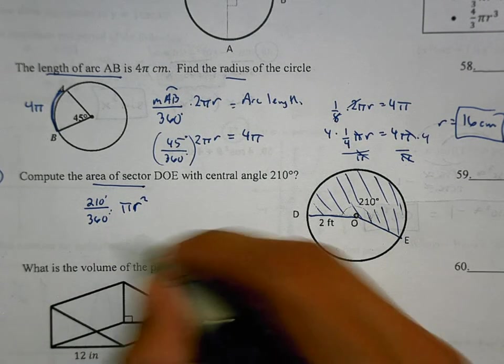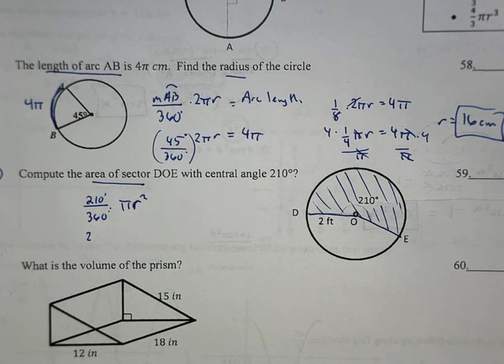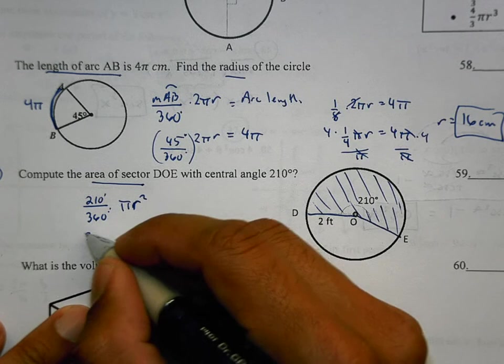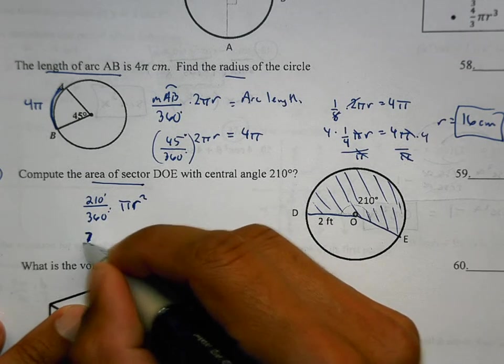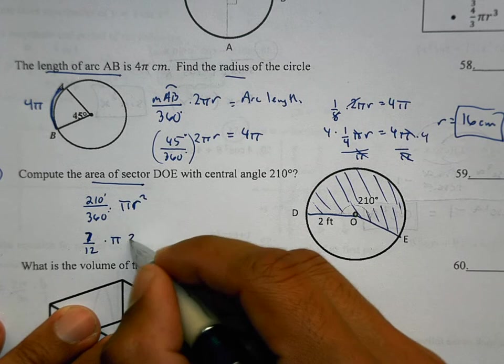So what is it? 210 divided by 360. I'm going to plug that into my calculator and see what that reduces to. It reduces to 7/12. 7/12 times π, and the radius here is 2 feet. 2 squared.